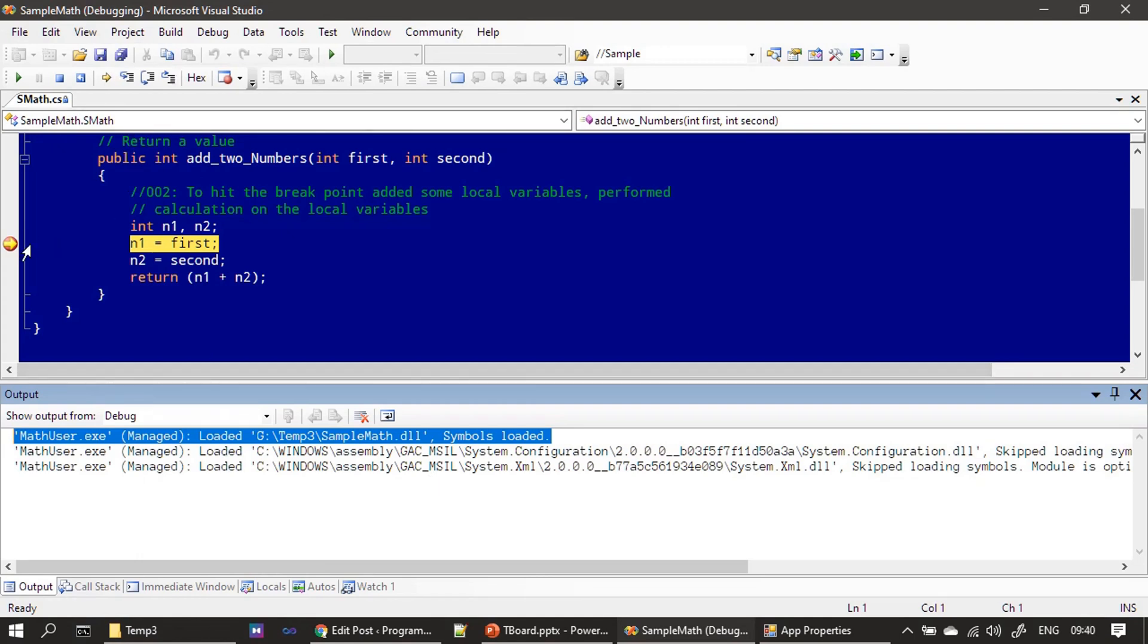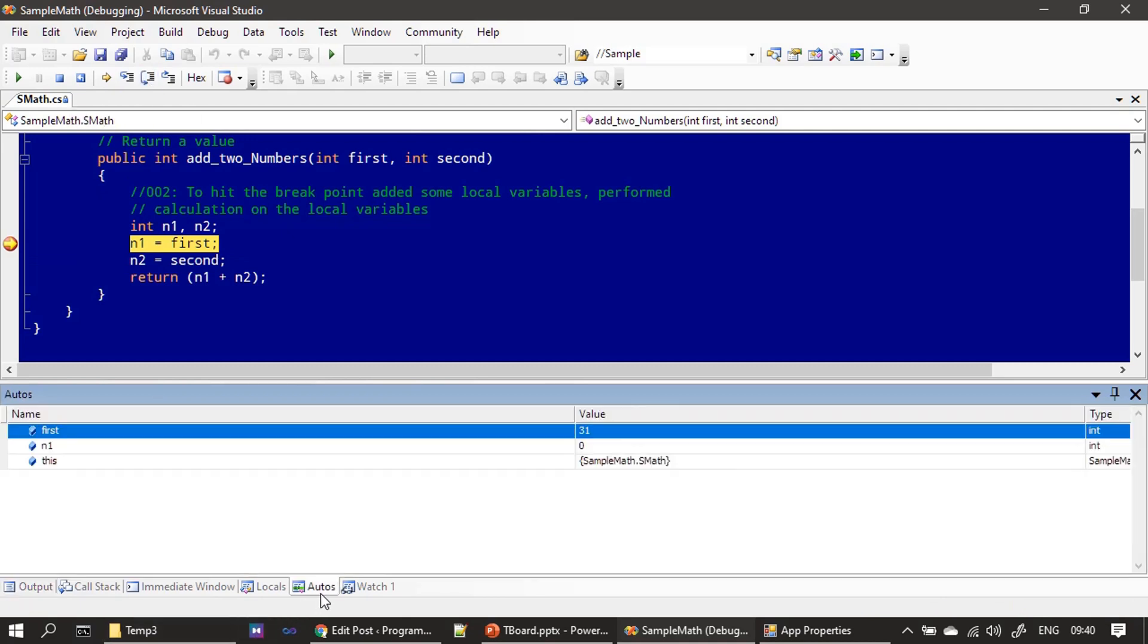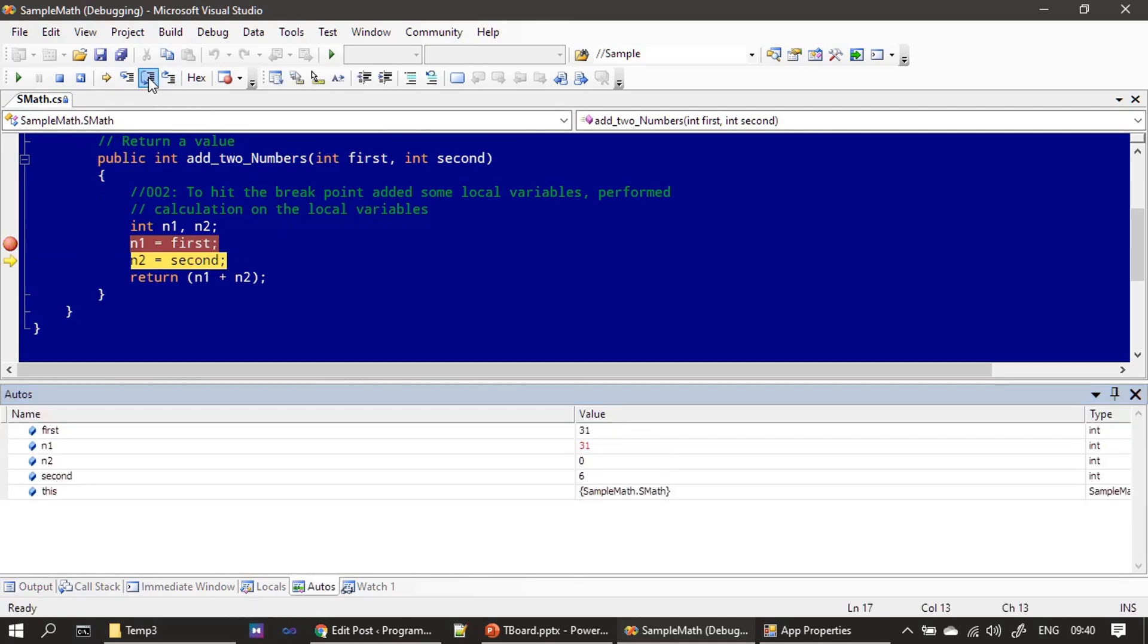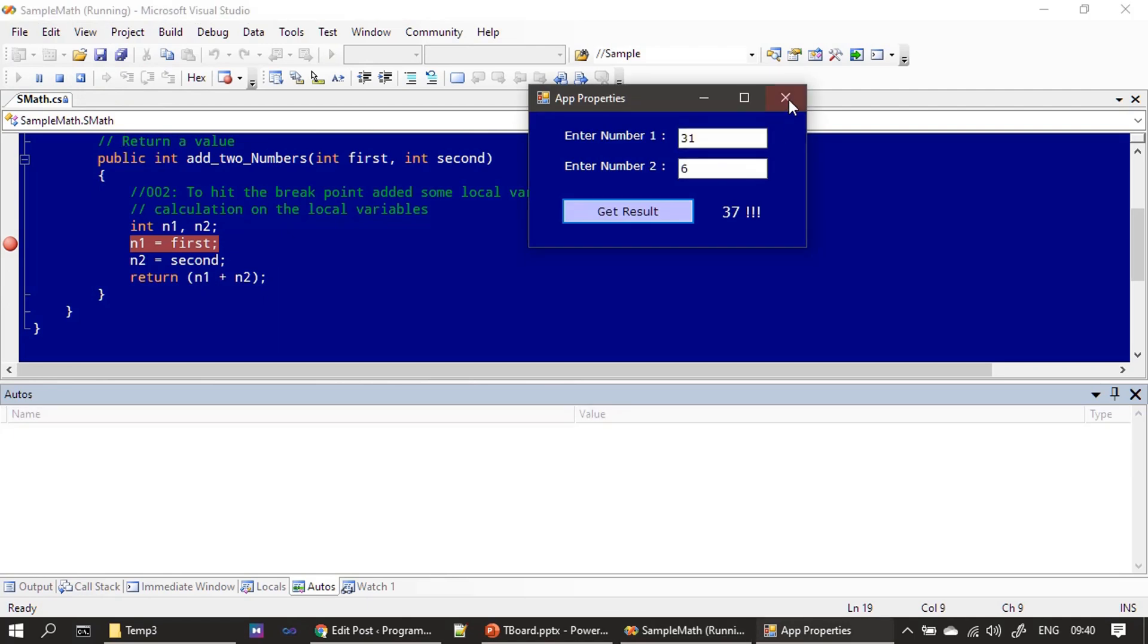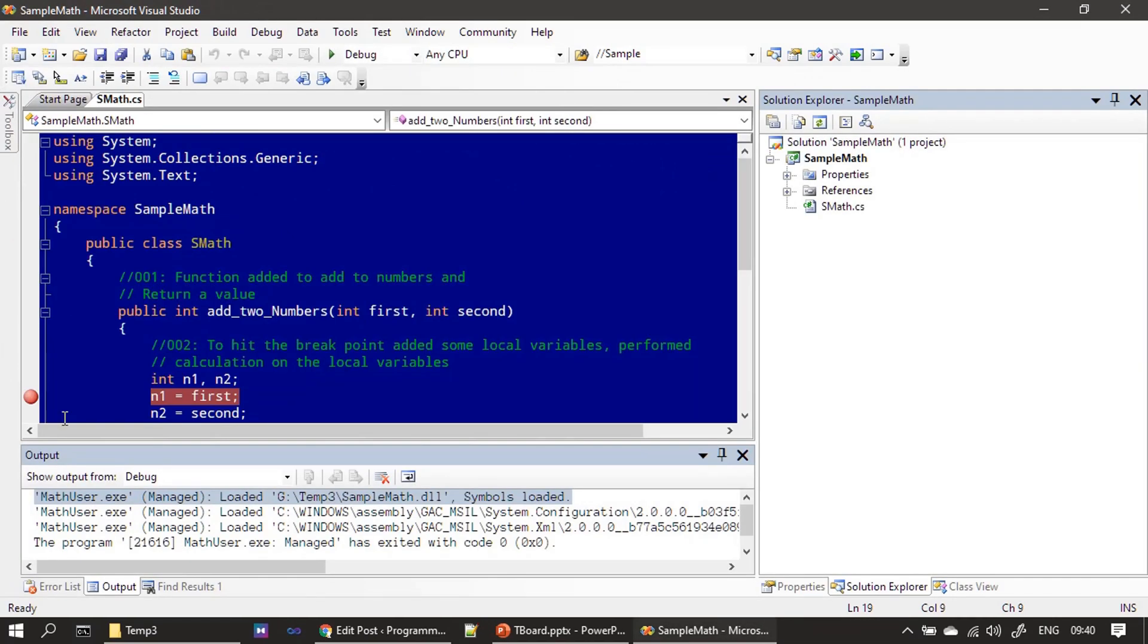That's all. Now the breakpoint is hit. Now you can easily debug it. Let me go to Auto window and you can see n1 is 31, that's what user gave in their text box, then another one is 6. After that we are summing up these two and retaining the value. If there are any errors, you will find what is there in condition, how the error is induced by the DLL.